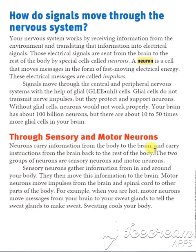Neurons carry information from the body to the brain and carry instructions from the brain back to the rest of the body. There are two groups of neurons: sensory and motor neurons. Sensory neurons are responsible for gathering information in and around the body and moving that information to the brain. Motor neurons are responsible for moving impulses from the brain and spinal cord to the other parts of the body. One is taking and the other is giving.